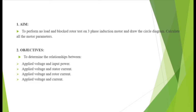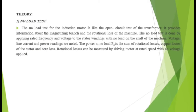The objective of the practical is to determine the relationships between: number one, applied voltage and input power; number two, applied voltage and stator current; number three, applied voltage and rotor current; and number four, applied voltage and current — in order to draw the circle diagram.